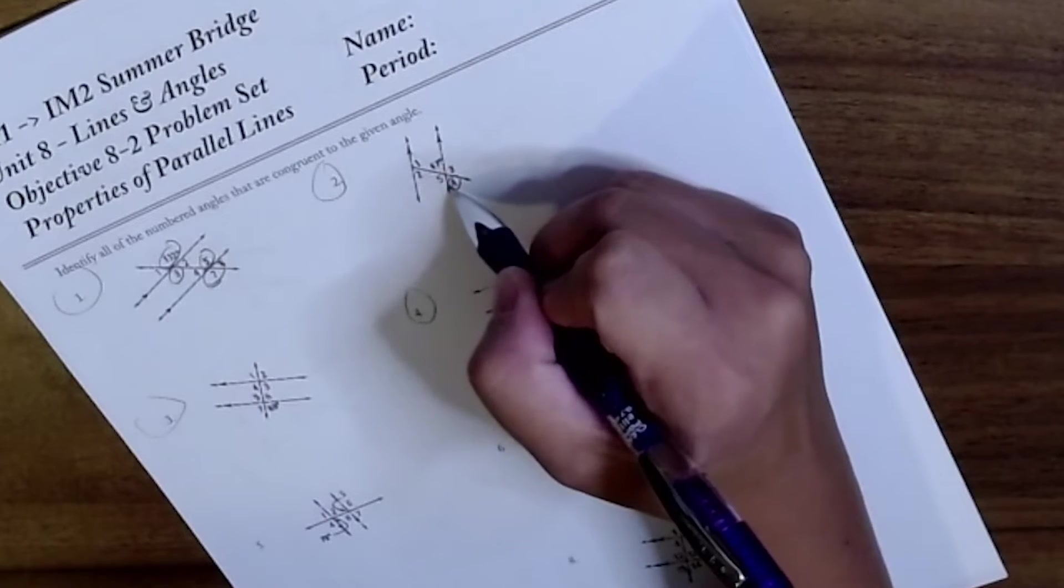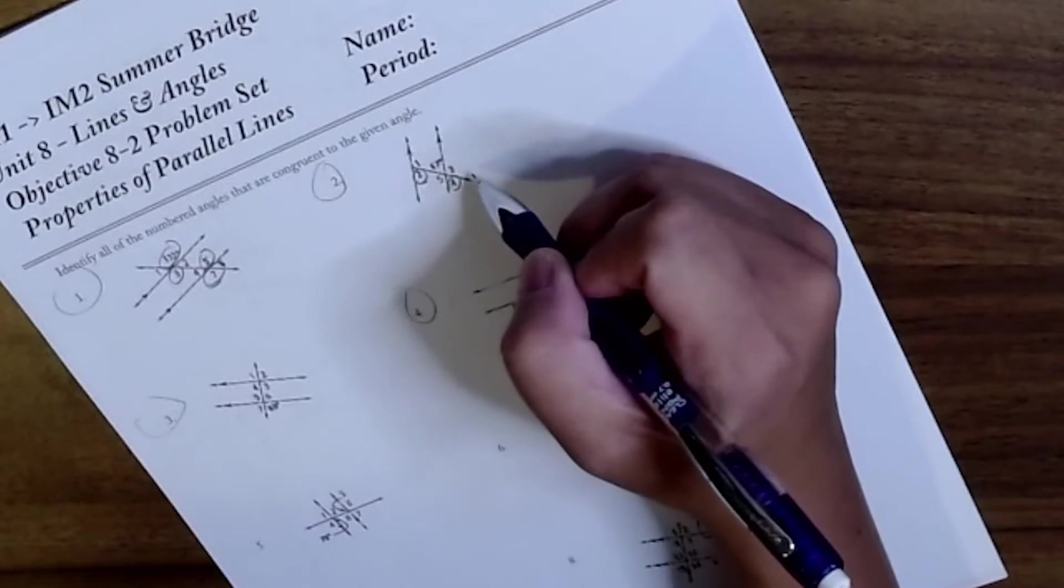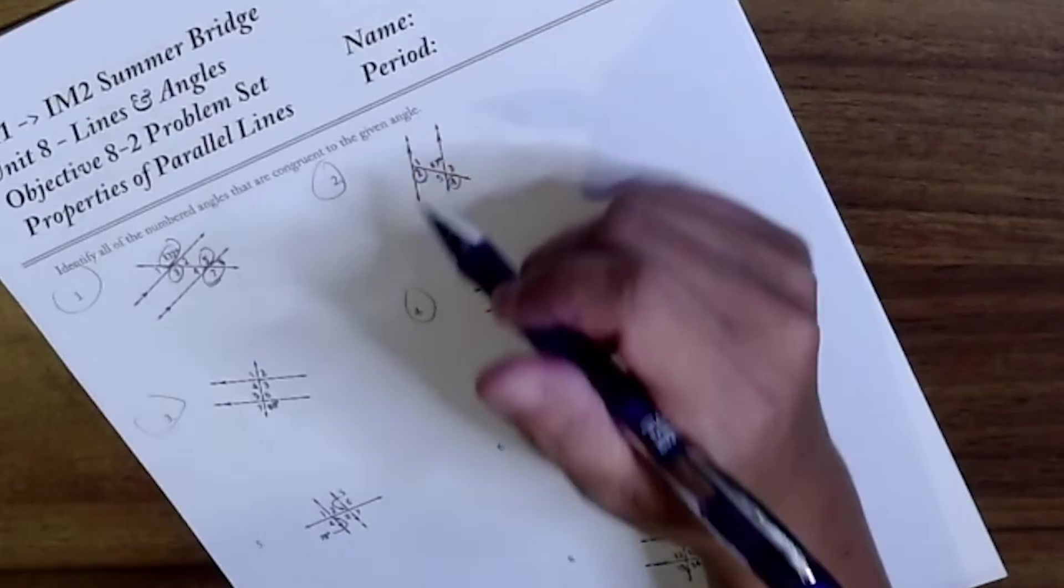67, so 4 is congruent because they're vertical, 2 because of alternate interior, and that's it.